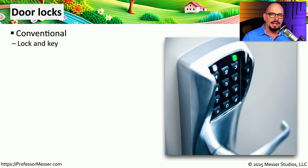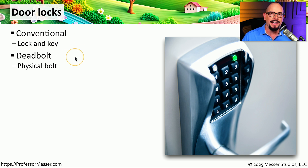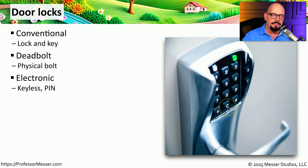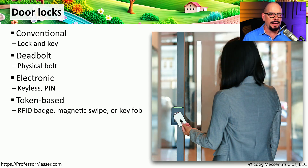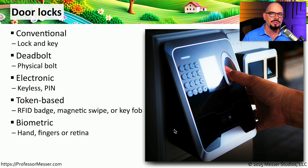There are many ways to lock and secure a door and provide access through it. The most common is a conventional lock and key, which most of us use at home, often combined with a deadbolt for additional security. Electronic locks require you to input a specific personal identification number. Token-based locks use the RFID chip inside your badge to grant access. In high security environments, biometrics may be used — fingerprint, handprint, or even retina scanning — to prove you are the authorized person.